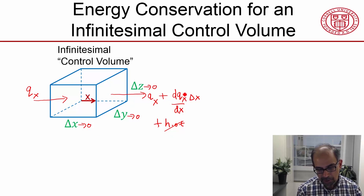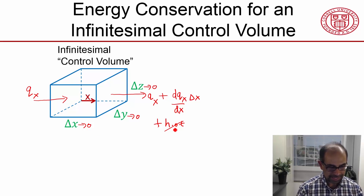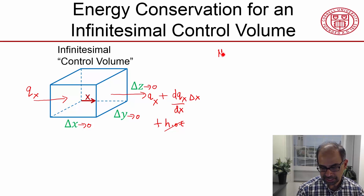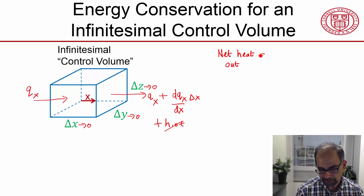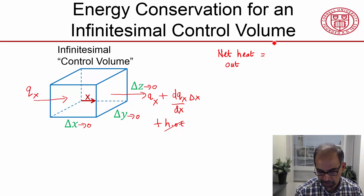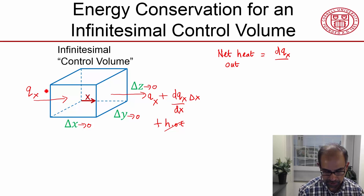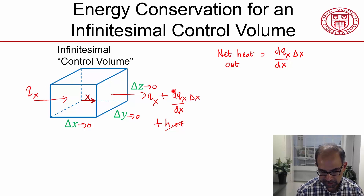So the heat flowing out is slightly different from the heat coming in. The net heat flow out is going to have the q_x terms cancel, leaving just the change from one face to the other, given by that term.